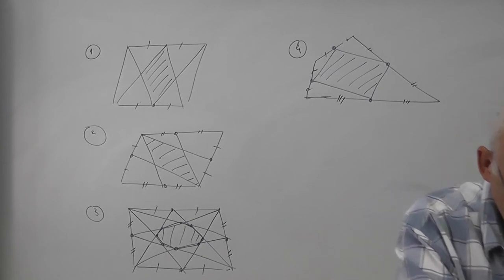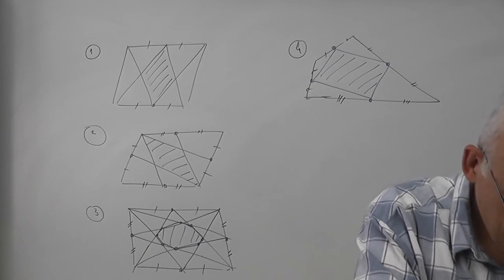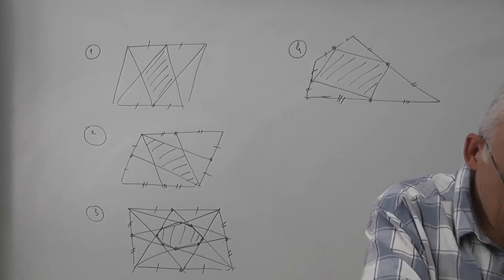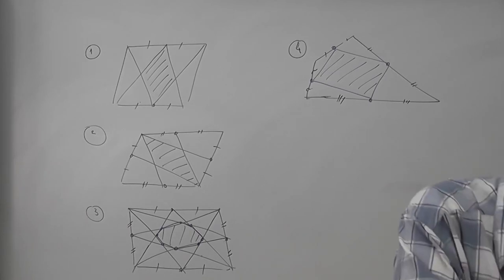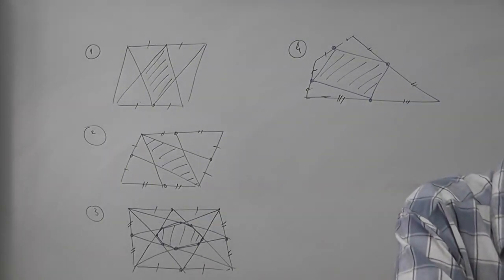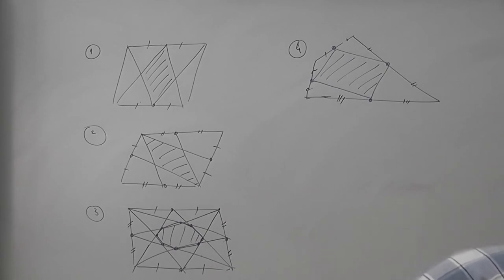Then if this is alpha, this is beta, this is gamma and this is delta. We can show if beta plus delta equals alpha plus beta, which equals alpha, it equals gamma plus delta.